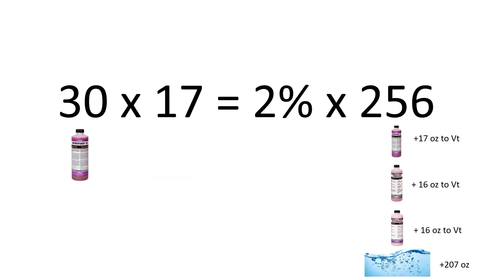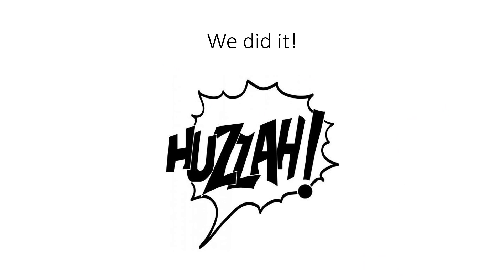So now we know where all our fluid goes. We know that we have 17 ounces of arterial fluid to create a 2% solution strength, and our total volume is going to be made up of 17 ounces of arterial fluid, 16 ounces of ProFlow, 16 ounces of Restorative, and 207 ounces of water. Huzzah! We did it!